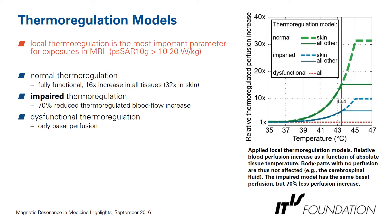Moving to temperature results, we need to include a thermoregulation model, as local thermoregulation is the most important parameter for exposures in MRI where local SAR values exceed 20 W/kg. We included a normal thermoregulation model — a fully functional model with a 16-fold increase in all tissues and up to 32-fold increase in skin. We also included an impaired thermoregulation model with 70% reduced blood flow increase, and a dysfunctional thermoregulation using only basal perfusion without any perfusion increase with temperature.